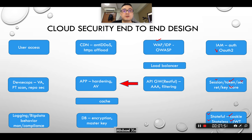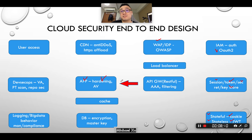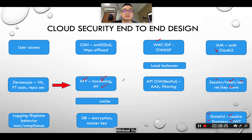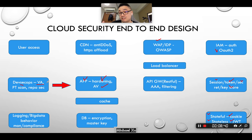From the API gateway, we hit the real application. The application could be server-based — the traditional approach leveraging CPU, storage, and an OS such as Linux or Windows — or serverless, for example AWS Lambda. From the server perspective, we do hardening, and if budget allows, install antivirus. From the DevOps perspective, we're now doing DevSecOps, embedding vulnerability assessment and penetration testing flows all along the DevSecOps pipeline.